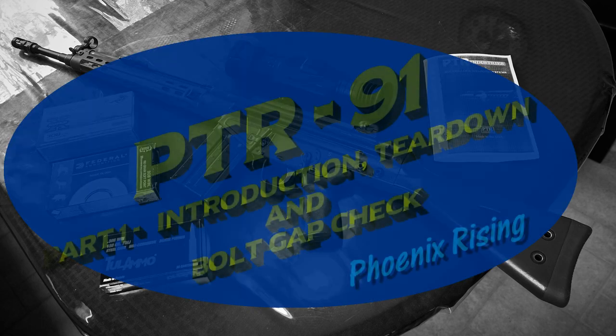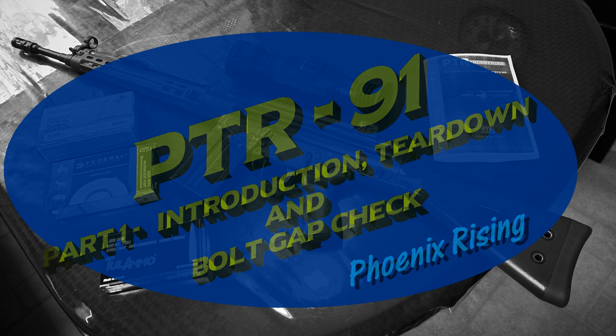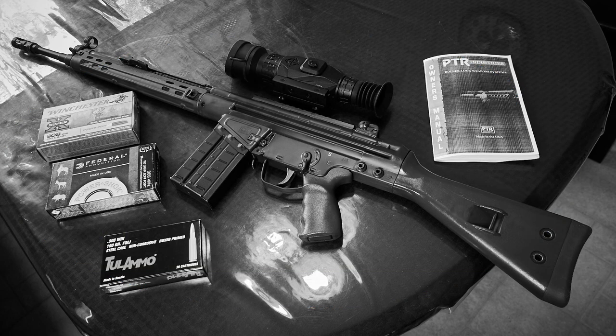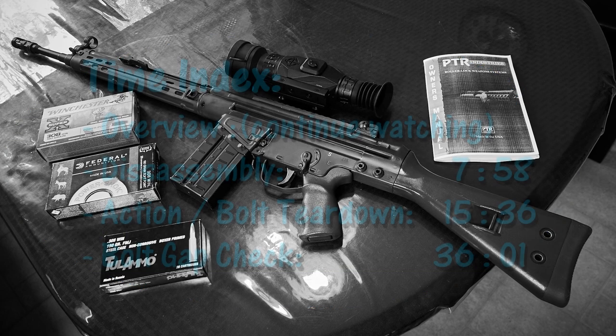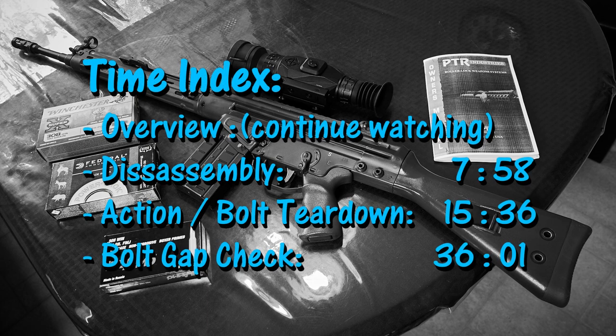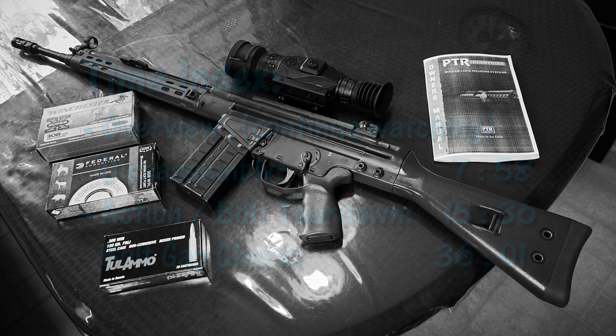Phoenix Rising here and today we're going to be doing part one, the introduction, how to tear down and put back together and doing bolt gap checks on the PTR-91 rifle which is a G3 HK-91 clone. This is going to be a several part series, today's the intro and teardown, principles of operation. We'll be doing a separate video on sighting in a Sightmark Wraith on this unit and a third one following the whole break-in process which is several hundred rounds including some accuracy checks both before and after break-in. So stay tuned and enjoy.